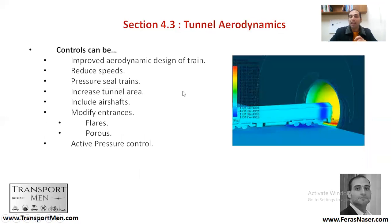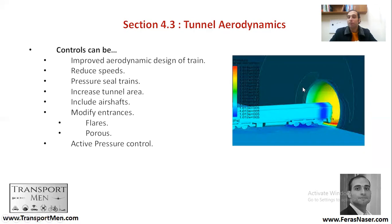What can we do? We can improve the aerodynamic design of the train — make a smoother, aerodynamically designed train. We can reduce the speed. We can make pressure-sealed trains, ensuring that the internal pressure is not affected by the outside. We can increase tunnel area — increase the cross-section. We can modify the tunnel entrance to make it smoother and better for any potential airflow coming from the train. Or we can do active pressure control — controlling the pressure inside the tunnel through fans and other configurations.